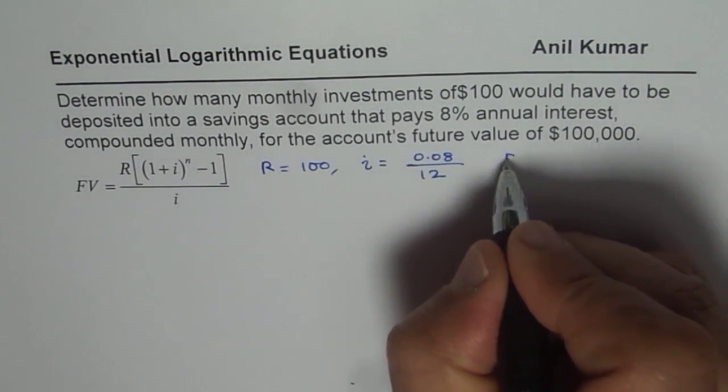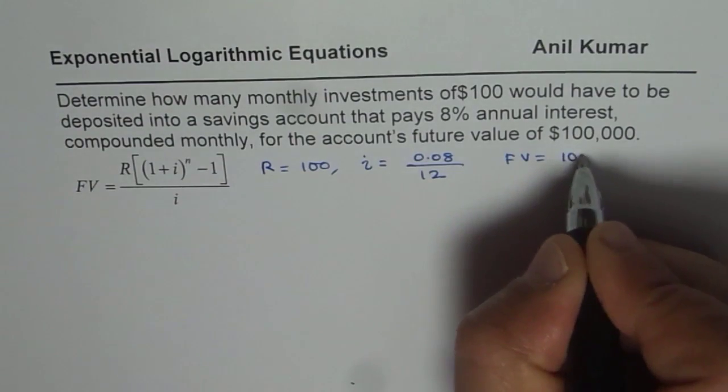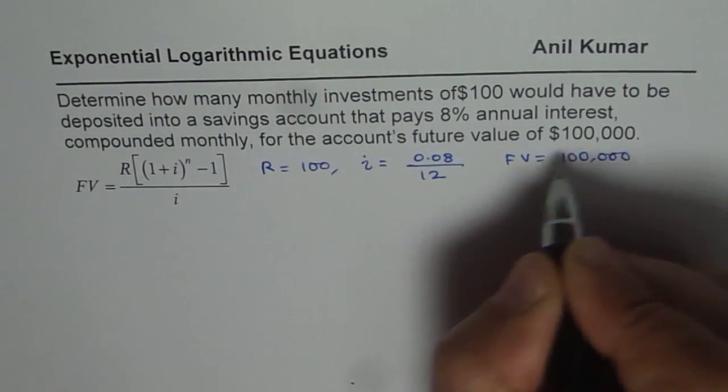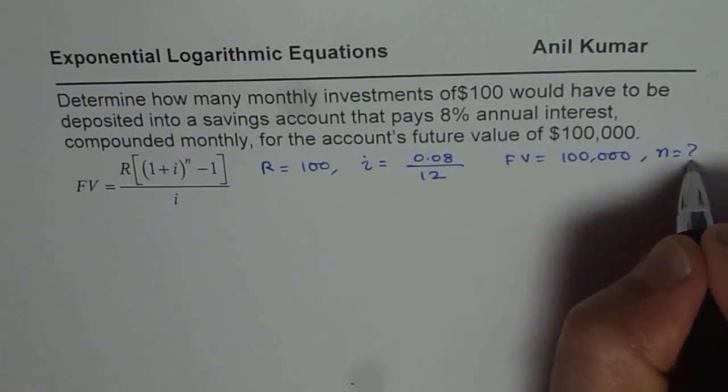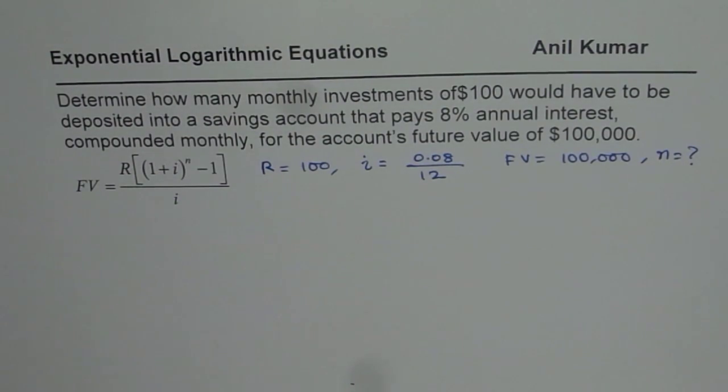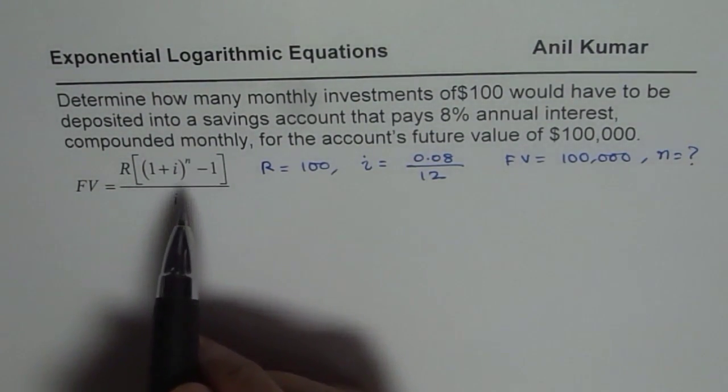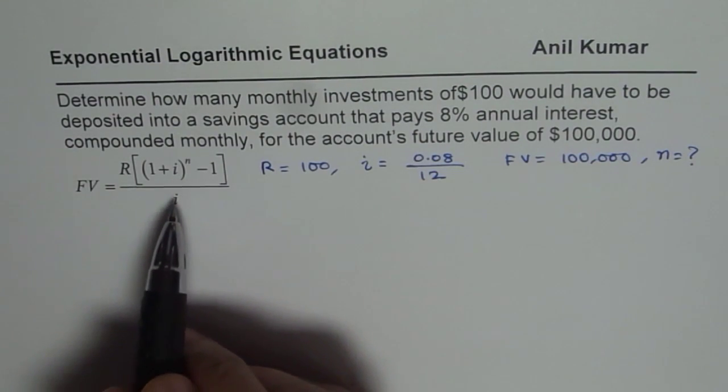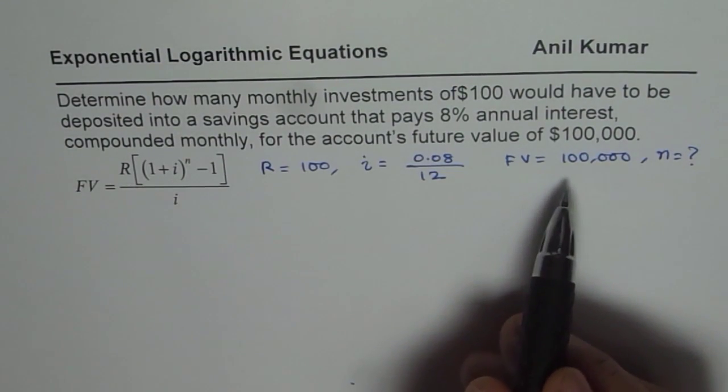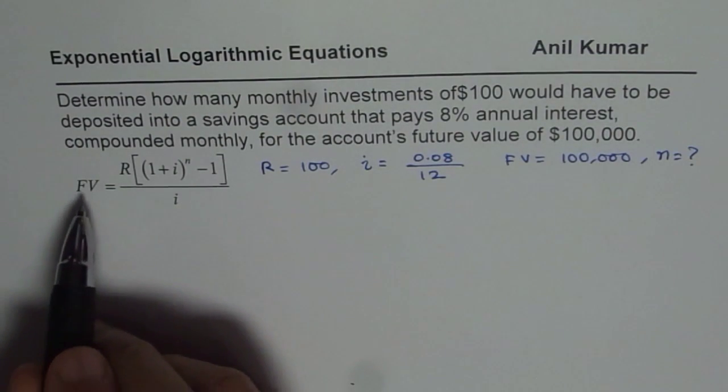Future value is $100,000. These values are given and we need to find N. You can substitute here, rearrange and figure it out. What we will do is actually rearrange the formula first, then substitute and find the answer.